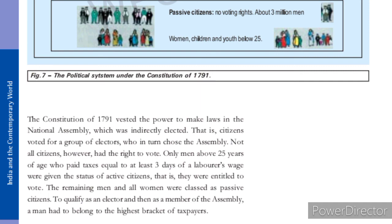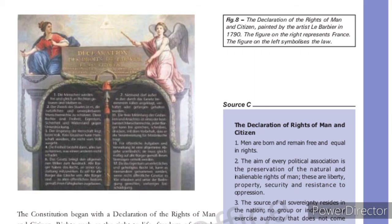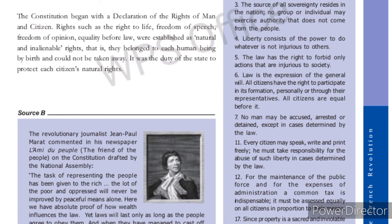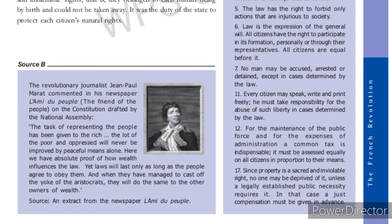The constitution began with a Declaration of the Rights of Man and Citizen. According to this declaration, the right to life, freedom of speech, freedom of opinion, and equality before the law were established as natural rights. It was the duty of the state to protect these rights. These were the laws made by the National Assembly after the constitution was formed.